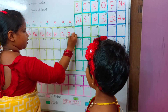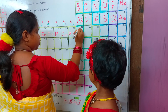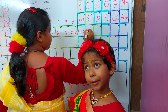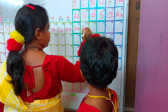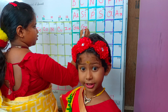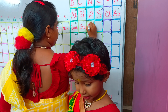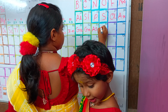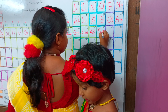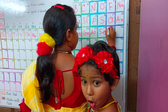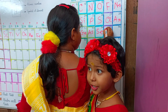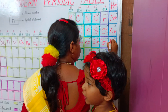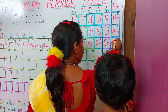31 gallium, Ga. 32 germanium, Ge. 33 arsenic, As. 34 selenium, Se. 35 bromine, Br. 36 krypton, Kr.